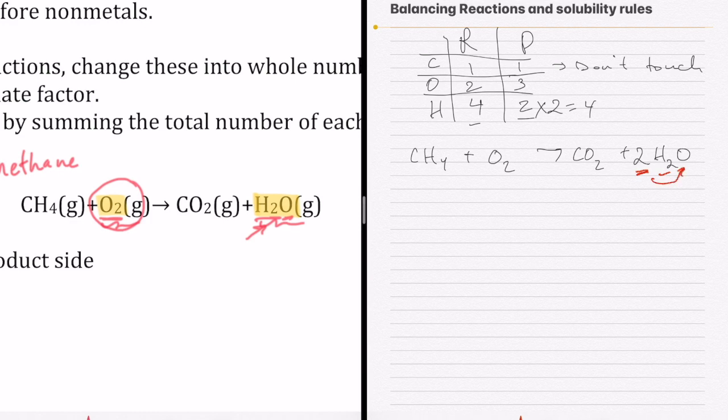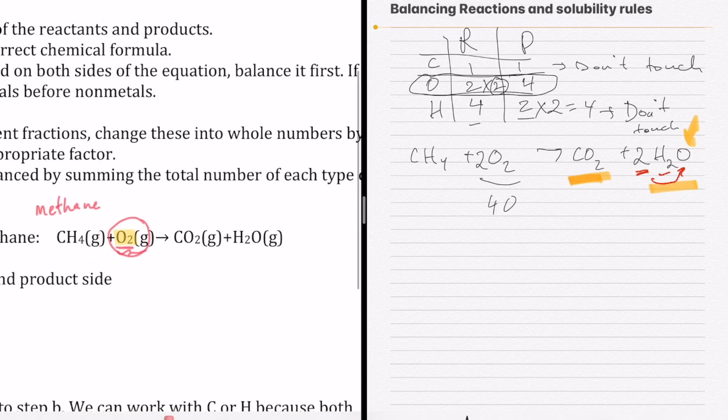When I put the 2 here, it impacts hydrogen but also oxygen. My oxygen on the right side becomes 4 because I have 2 oxygen plus 2 more oxygen. Now that I have 4 oxygen and 4 hydrogen, everything is balanced except oxygen in the middle. I need to multiply it by 2, so I put 2 in front of O2. Everything is balanced now.